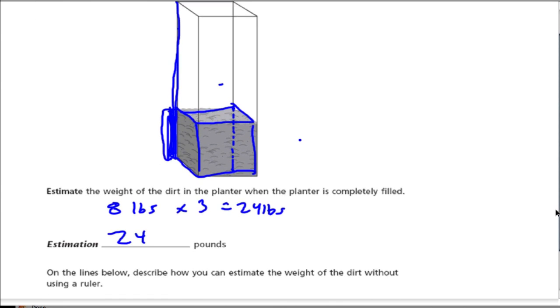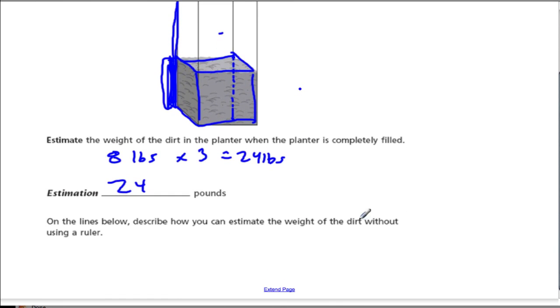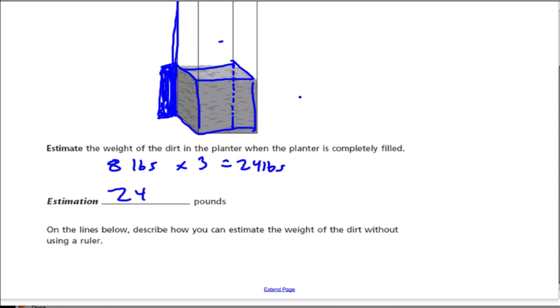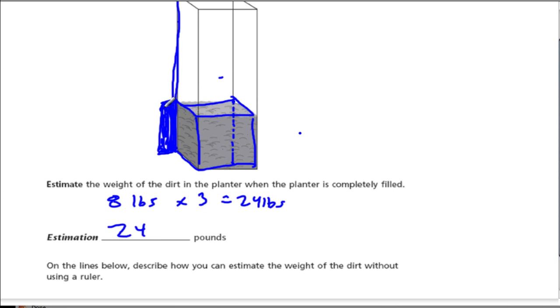Then it asks you to describe how you can estimate the weight of the dirt without using a ruler. What you want to pinpoint when you're describing something on a state test is not the general strategy, but a very specific strategy. You can say here that if you measure the length of an edge—it's called one of these lines, or just lines—and then figure how many times that section of the edge fits into the whole edge on that side, you could write about that. You would say what you're seeing there.